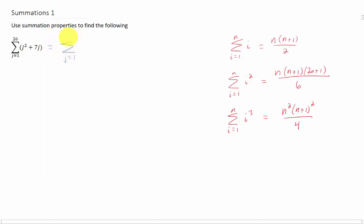Our index of summation is j, and we're summing from j equals 1 to 26. We're going to split that sum up into the j squared and the 7j, and you'll notice that we can pull a constant out of a summation.